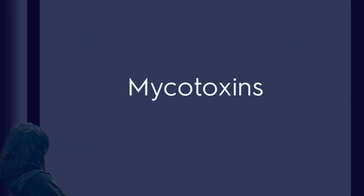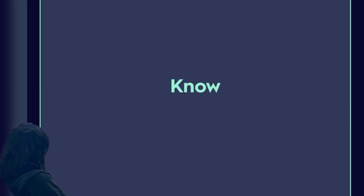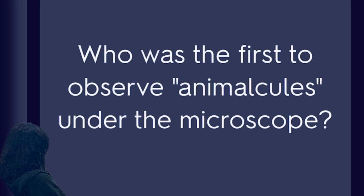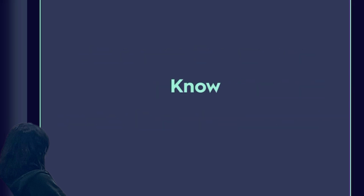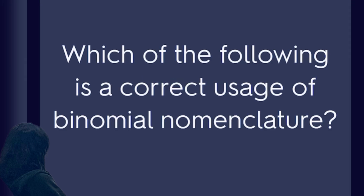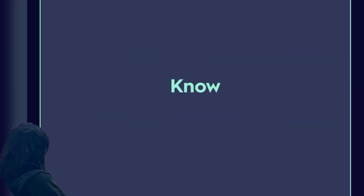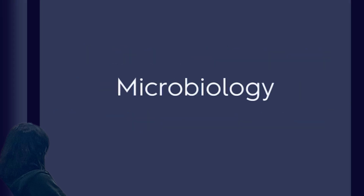Micodixons. Who was the first to observe animal cells under the microscope? Protozoa. Which of the following is a correct usage of binomial nomenclature? Microbiology.